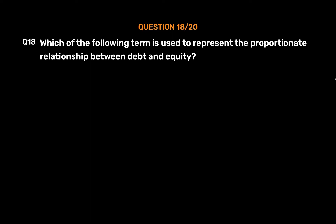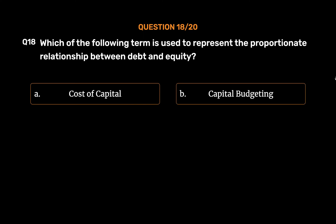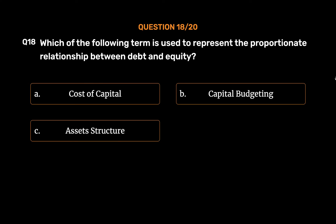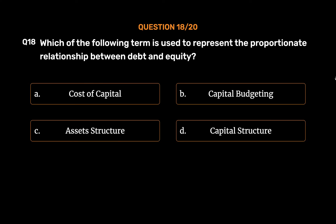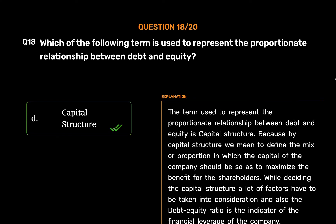Question number 18. Which of the following terms is used to represent the proportionate relationship between debt and equity? Option A: Cost of capital. Option B: Capital budgeting. Option C: Asset structure. Option D: Capital structure. The correct answer is Option D: Capital structure. The term used to represent the proportionate relationship between debt and equity is capital structure, which defines the mix or proportion in which the capital of the company should be arranged to maximize the benefit for shareholders.